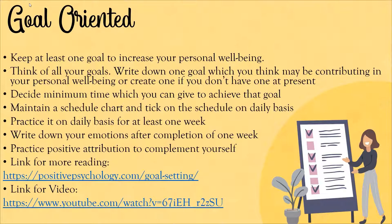Keep at least one goal to increase your personal well-being. Think of all your goals and write down one which you feel may be contributing to your personal well-being, or create one if you don't have one at present. Decide the minimum time you can give to achieve that goal. Maintain a schedule chart and tick it on a daily basis. Practice it for at least a week. Write down your emotions after completion of one week. Practice positive attribution to compliment yourself. To know more about goal-orientedness, you can visit the mentioned resources.